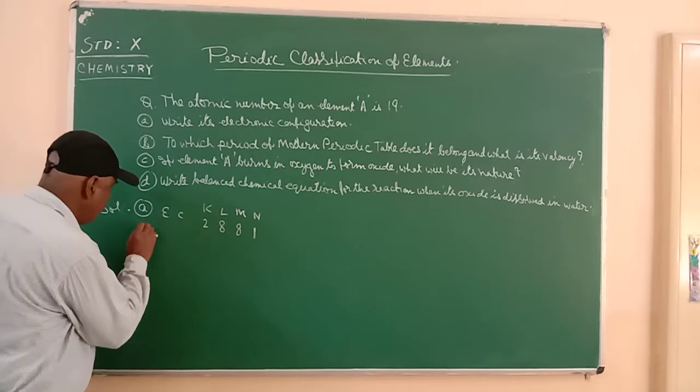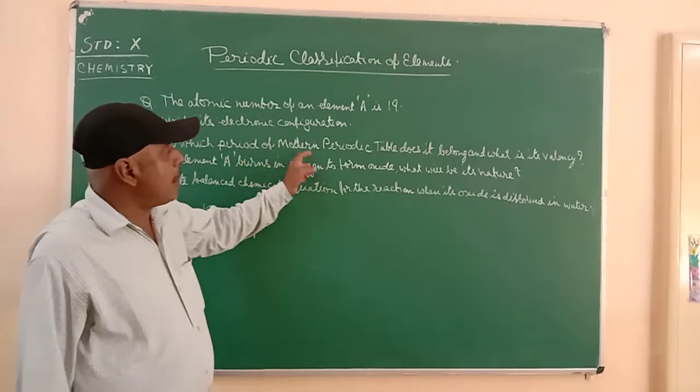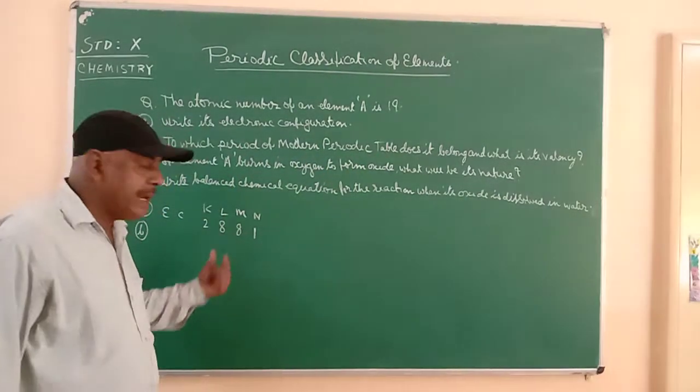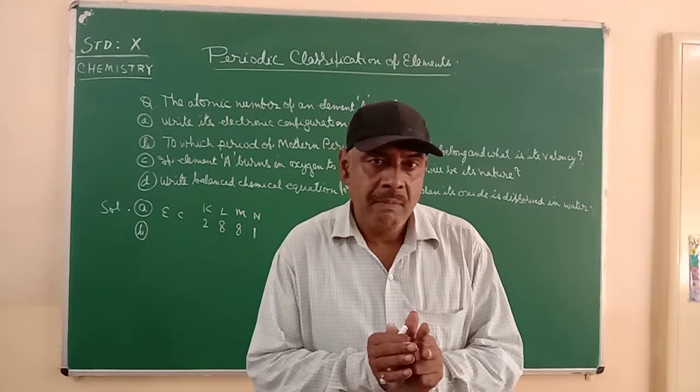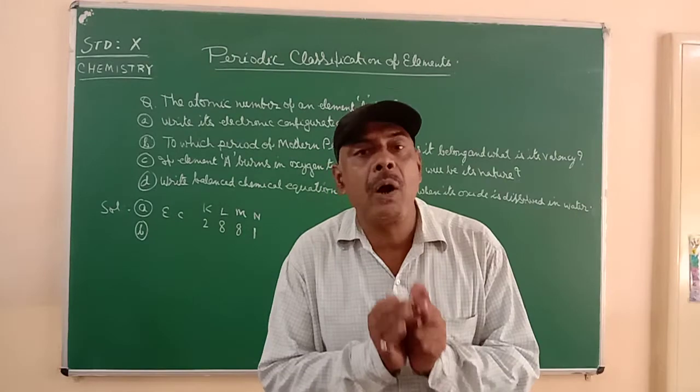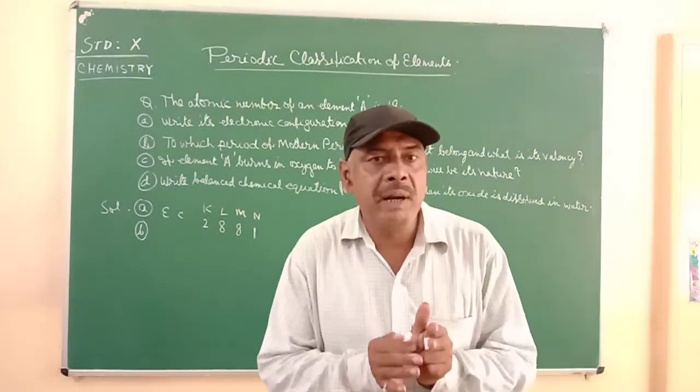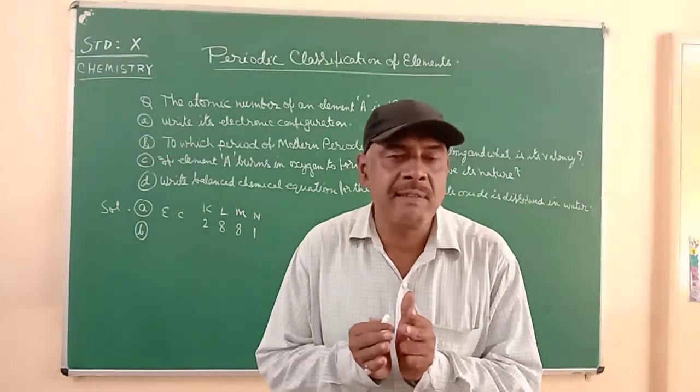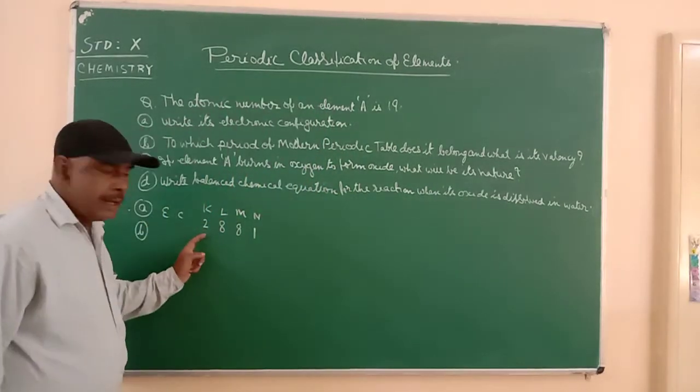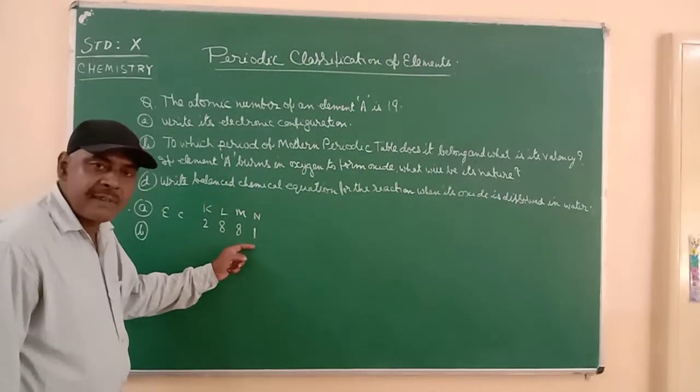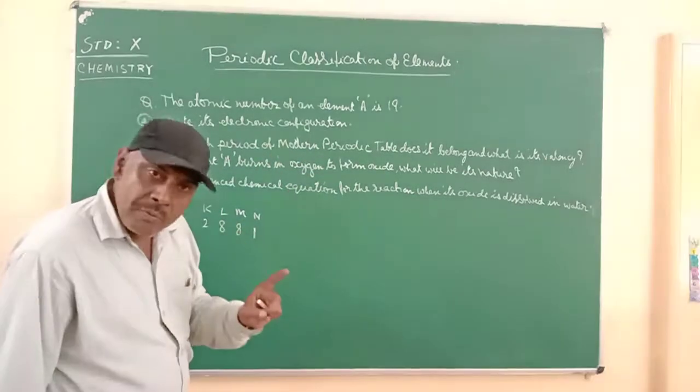Secondly, to which period of the modern periodic table does it belong? The number of shells gives me the idea of the number of period. To which period the element belongs is governed by the number of shells. Here we see there are 4 shells, so the number of period will be 4th period.